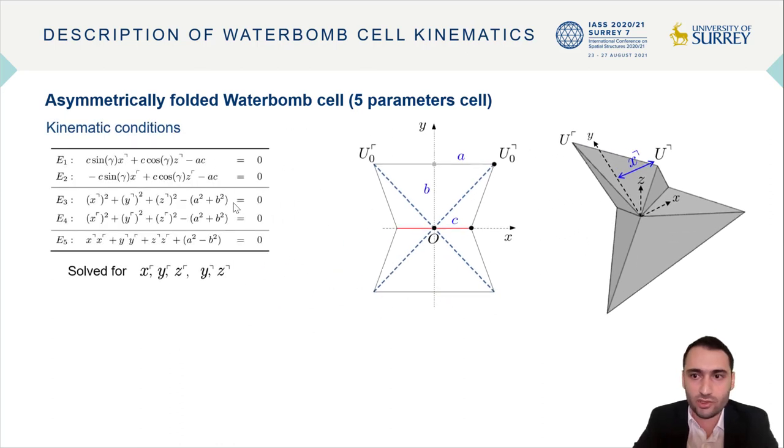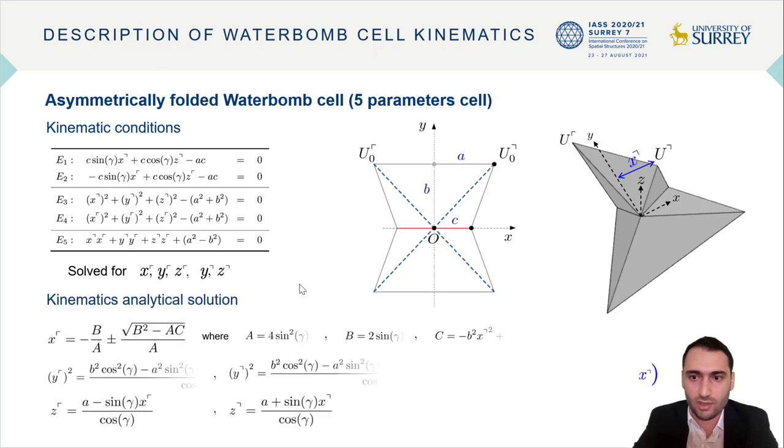So we introduce these five conditions which are again based on supposing a rigid folding material. These five equations are solved for the coordinates of the upper left corner here and the y and z of the upper right corner, which yield rather lengthy closed form solutions that are trimmed here for simplicity.